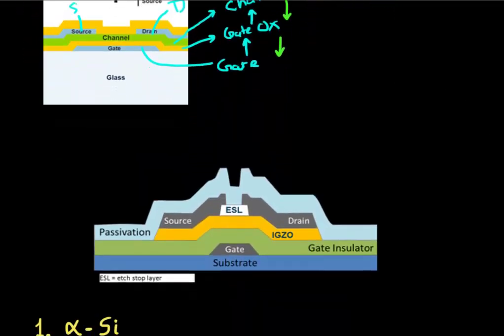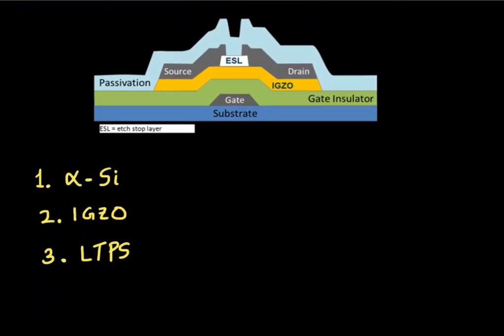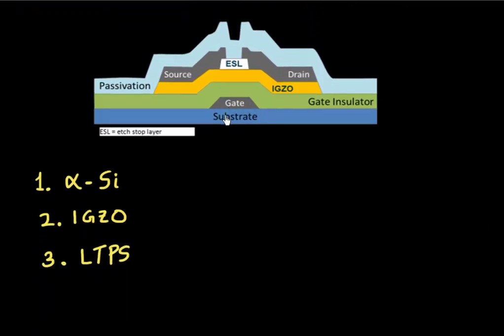And shown here is one of these thin film transistors in more detail. So you can see there is this gate line which was deposited first. And then you have this gate insulator. The material over here which is used is this metal oxide.